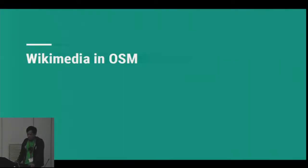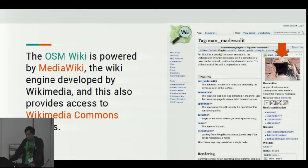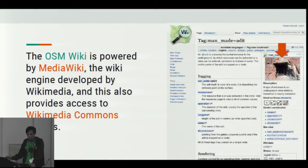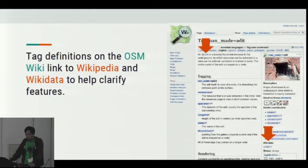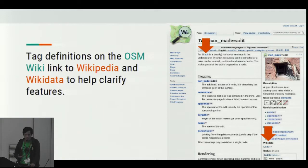Let's talk about how Wikimedia is being used in OpenStreetMap. First of all, the OSM wiki is powered by MediaWiki, the wiki engine developed by Wikimedia. And this also provides access to Wikimedia Commons images. For example, here's a peculiar image of the OpenStreetMap document — a feature of an edit on the OSM wiki — to help illustrate what an edit is. Tag definitions in the OSM wiki also link to Wikipedia and Wikidata to help clarify features, so if you need more information about what an edit is, you can go to the Wikipedia article.